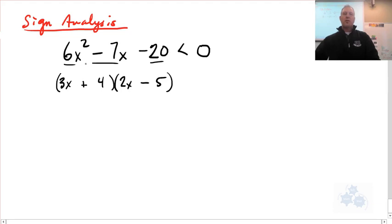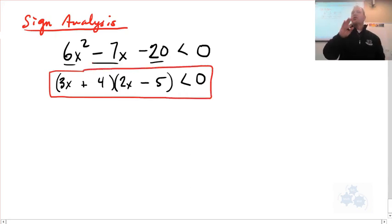So 3 times 2 is 6. x times x is x squared. I have negative 15x plus 8x gives me negative 7x. And then positive 4 times negative 5 gives me negative 20. So this is what I have. And this is what you want to do sign analysis on. If you have this situation, do sign analysis.